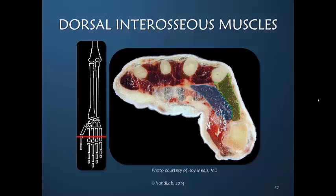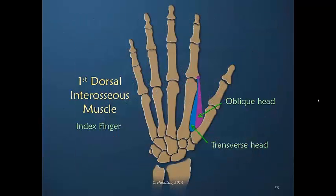The structure below it is the adductor, which also has significant size and in total is larger than the first dorsal. The adductor is the largest intrinsic muscle in the human hand. The oblique and transverse heads are called this because they are somewhat different from just the dorsal and volar belly names. However, it is not incorrect to also call them the dorsal and volar belly, but they are more commonly referred to as the oblique and transverse head or belly.